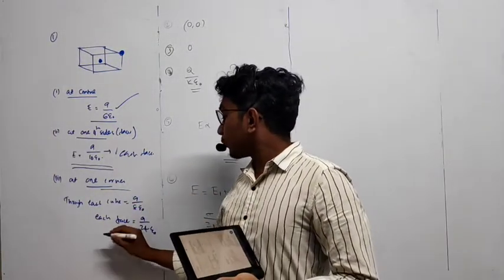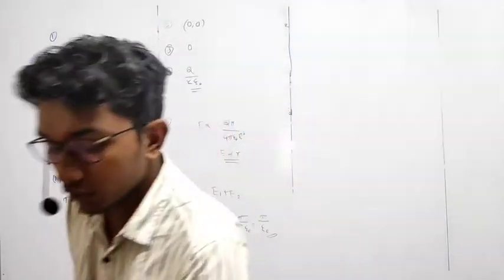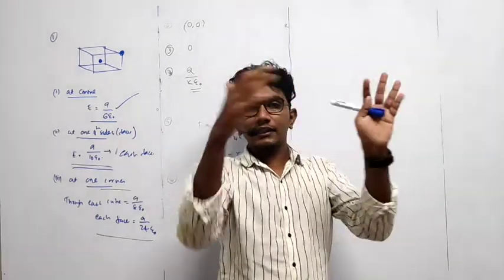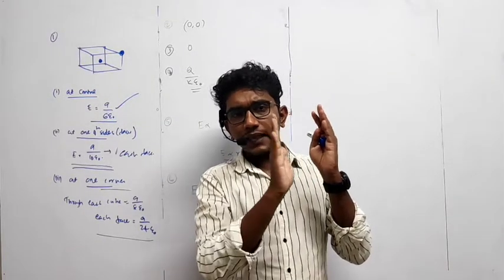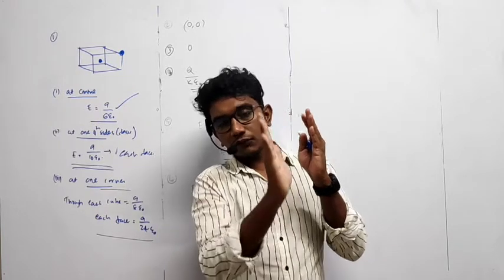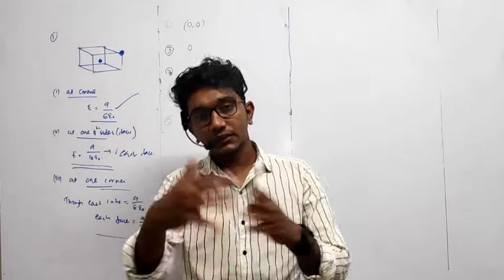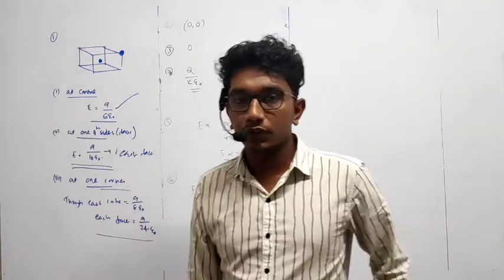And then what about each face? It will be Q by 24 epsilon 0. You can check that 8 cubes are connecting like this, 1 cube has 6 faces, but total 8, 8 faces will cover themselves, so total 24 faces will be there out, so it will be through each face Q by 24 epsilon 0.